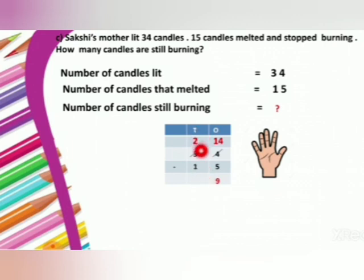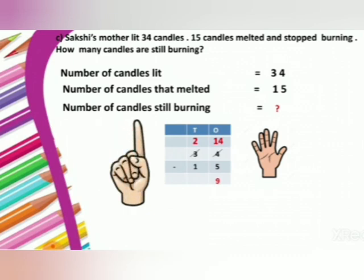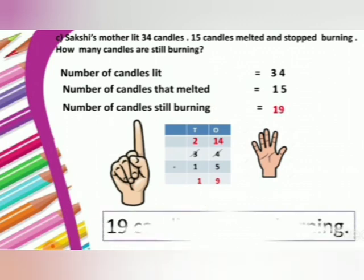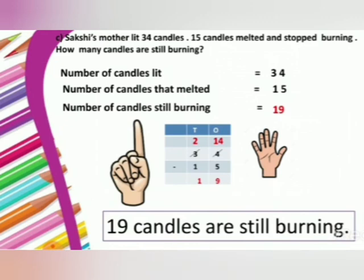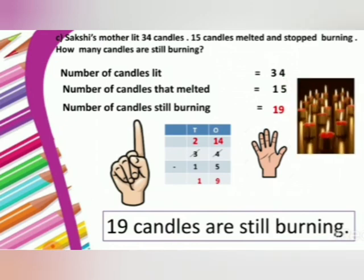Now let's move to the tens column. 2 minus 1 — open your 2 fingers, close 1 finger. So 2 minus 1, your answer is 1. Number of candles still burning — the answer is 19. 19 candles are still burning. So that's all for today. Stay safe. Thank you.